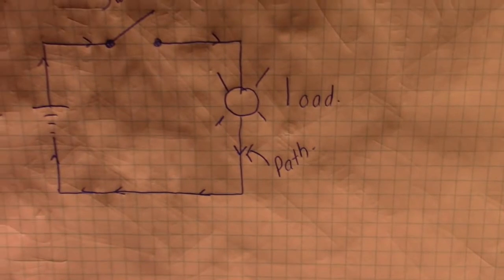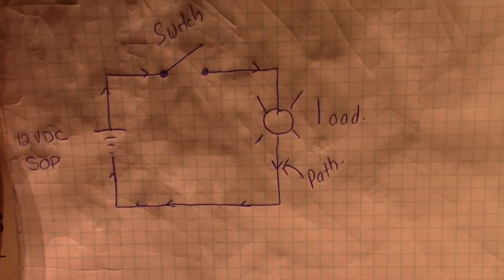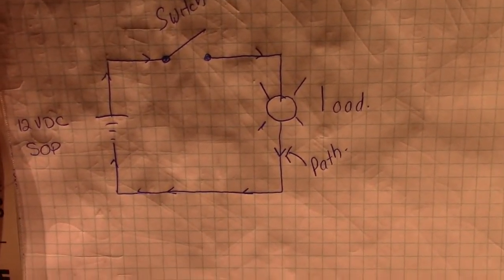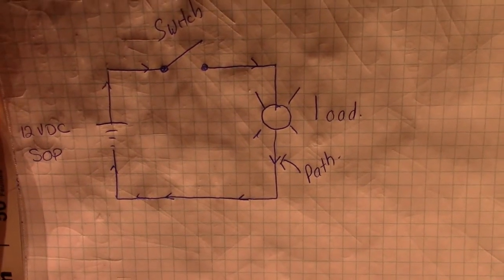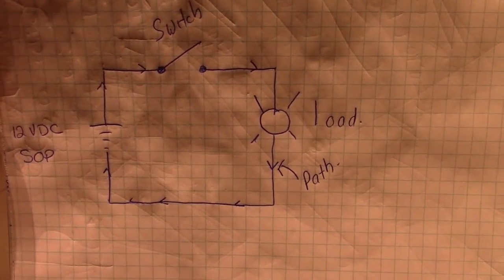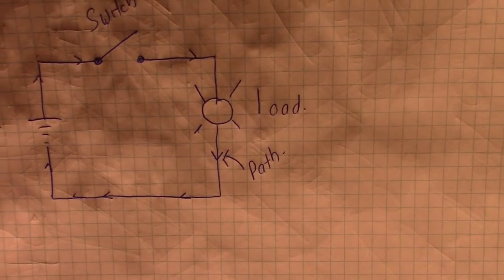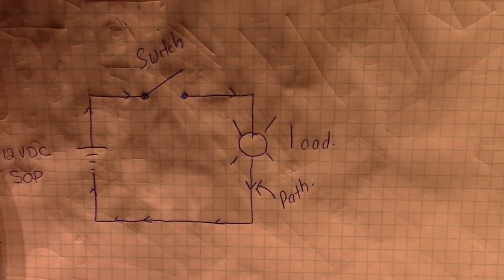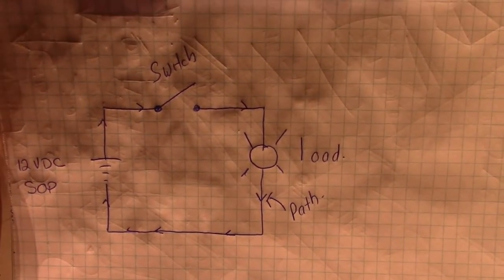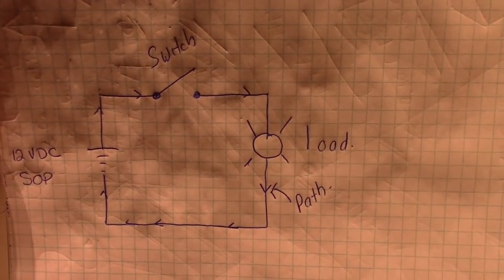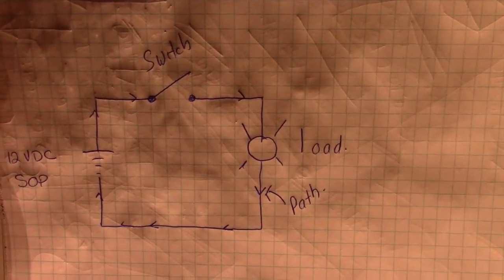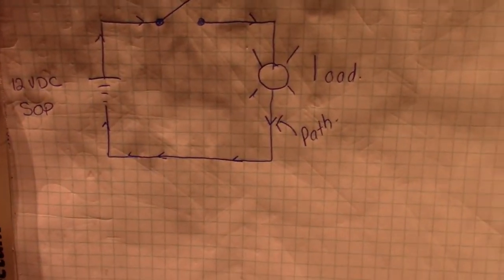In order for any electrical circuit to work, you have to have a source of power, you must have a switch to control the flow of that power, you need to have a load, which is the thing that's going to be doing the work for you. For example, this could be a light, it could also be your starter motor, and then you must have a completed path.